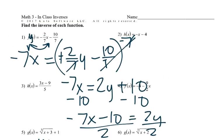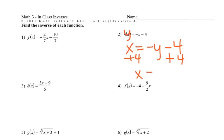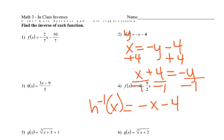Number 2, same idea. So I'll make that y, swap the x and the y, then solve for y. x plus 4 equals negative y, divide by negative 1. So negative x minus 4 equals y. Then we change the y back to the inverse notation, so we'd have h inverse of x, since it started out as h of x.